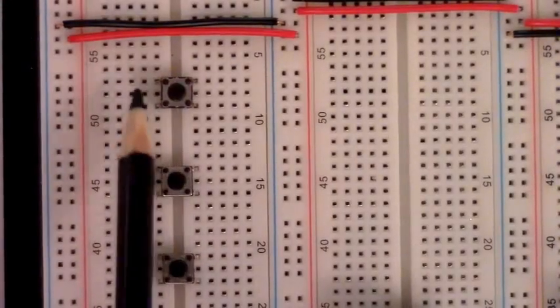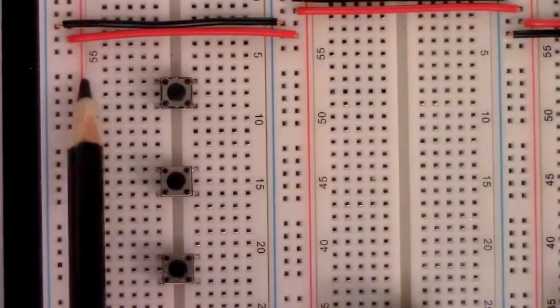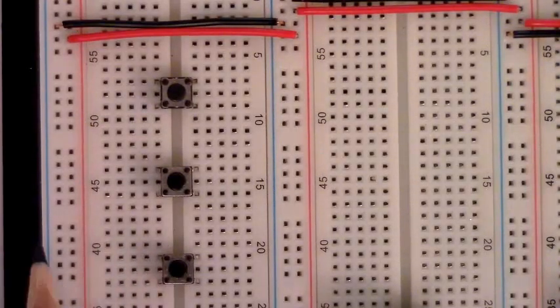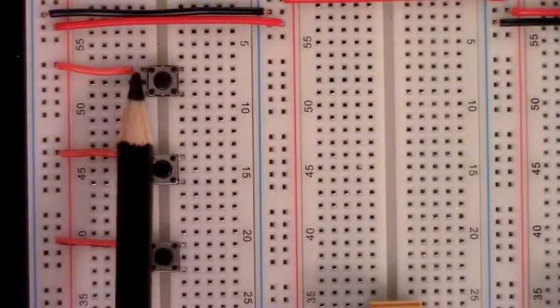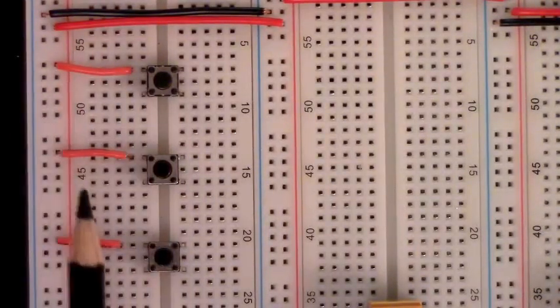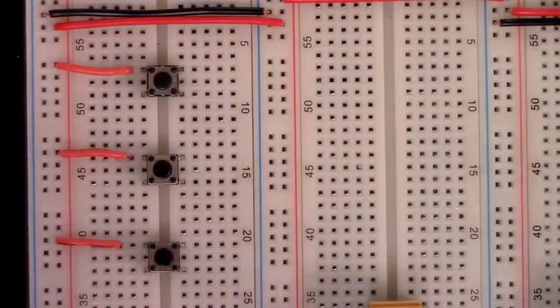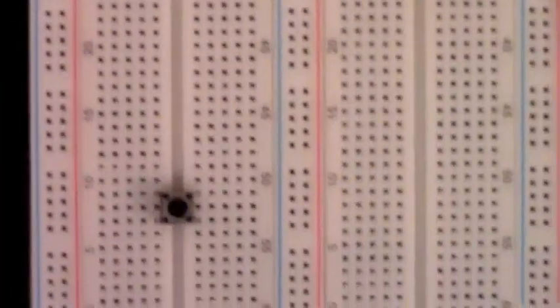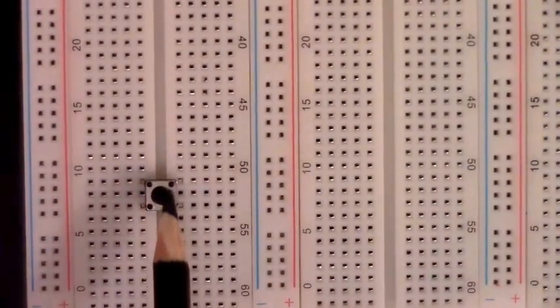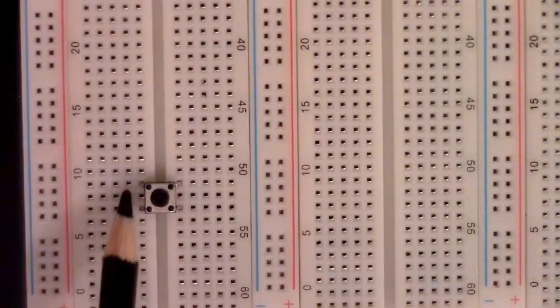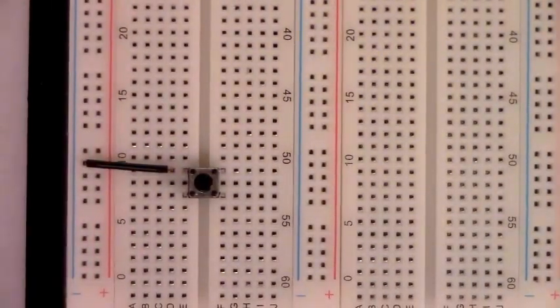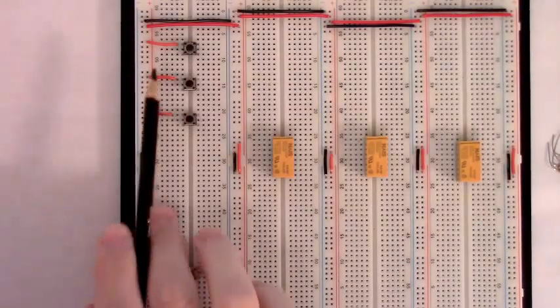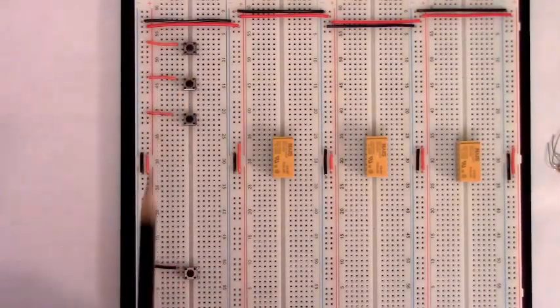We've connected the upper left hand leg of each of our momentary buttons to VCC. Next we need to move down the board to the lower master reset momentary button and we need to connect its upper left hand leg to the ground row like that. When completed with those wires the board should look like this.